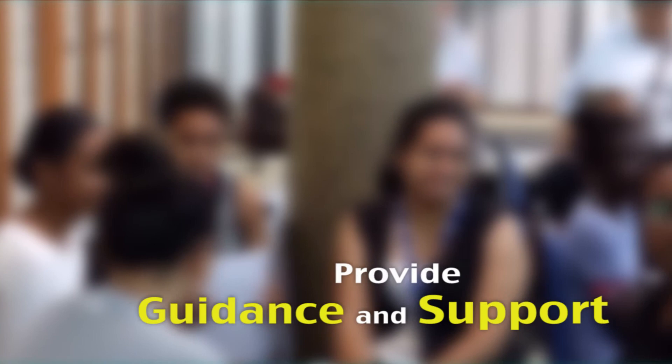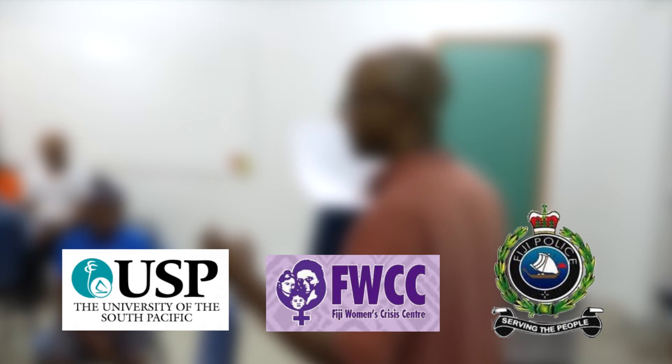USP has opened a 24-hour hotline to receive calls from the university community to report instances of sexual harassment or perceived sexual harassment, provide some guidance and support, and receive assurance from empathetic agents from the university. This service is to provide initial support and assurance only. If there are serious cases, the callers will be directed to appropriate entities for help, either in the university, the Fiji Women's Crisis Center, or the police.